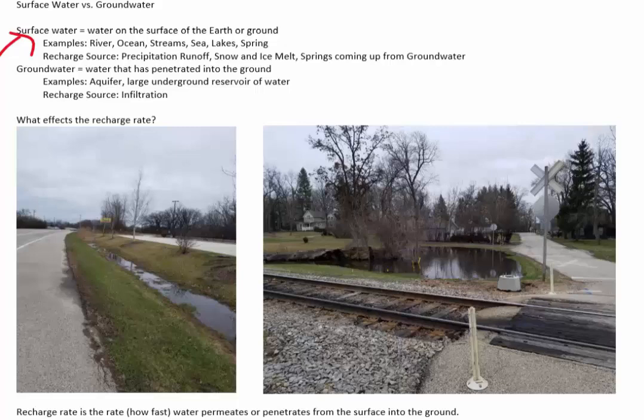You guys could probably name some things that I haven't put. I think I missed creeks. Surface water is recharged by precipitation runoff, snow and ice melting, or springs that can come up from groundwater. This is a really important thing to know. This is one of the connections that connect groundwater and surface water. So if you've ever heard of a spring-fed lake, that is the connection where a spring comes up from the groundwater and actually supplies the stream or the lake with its water source.